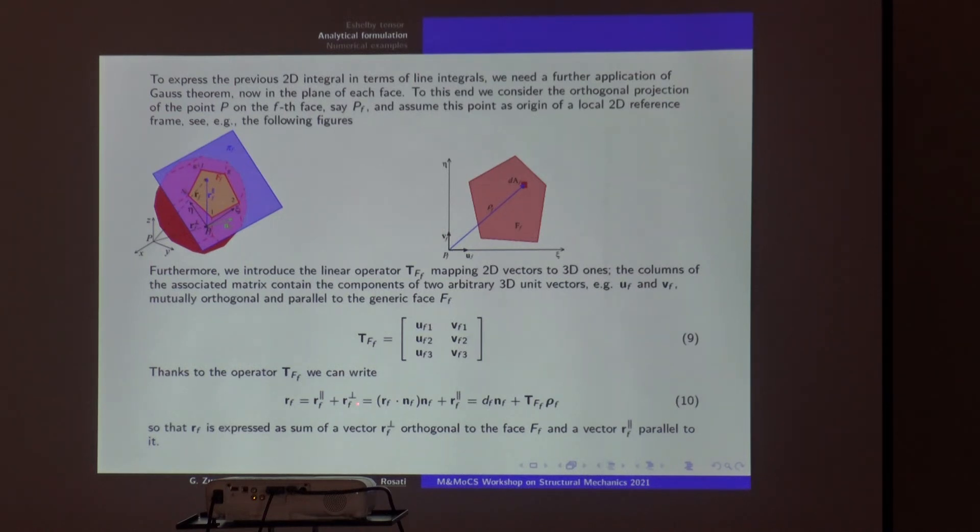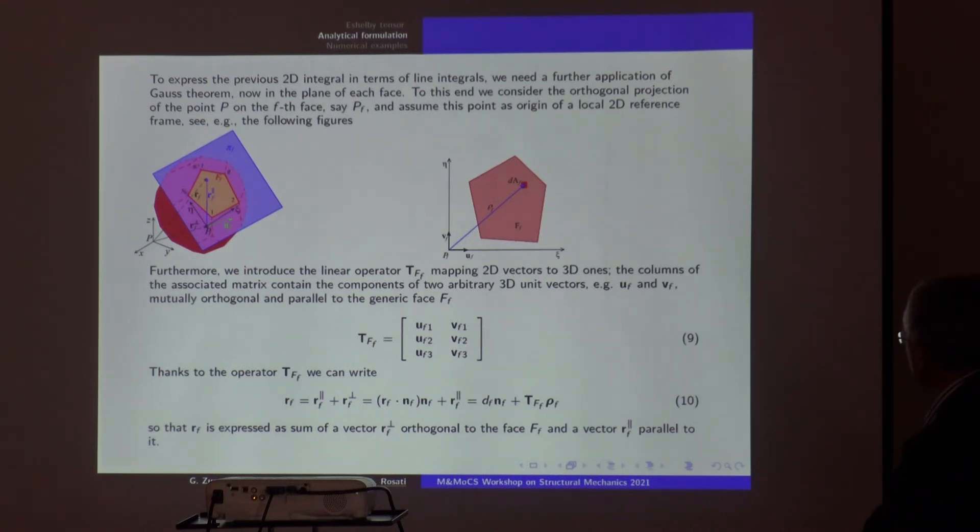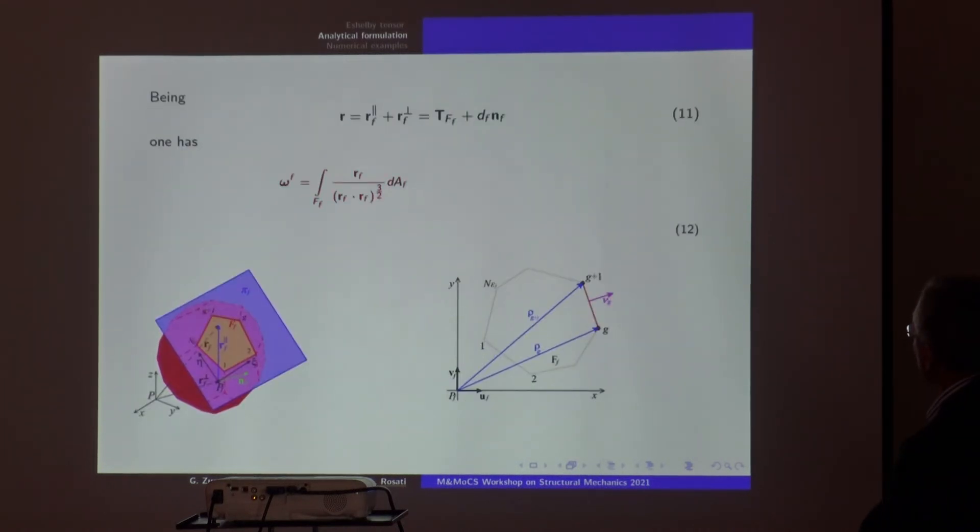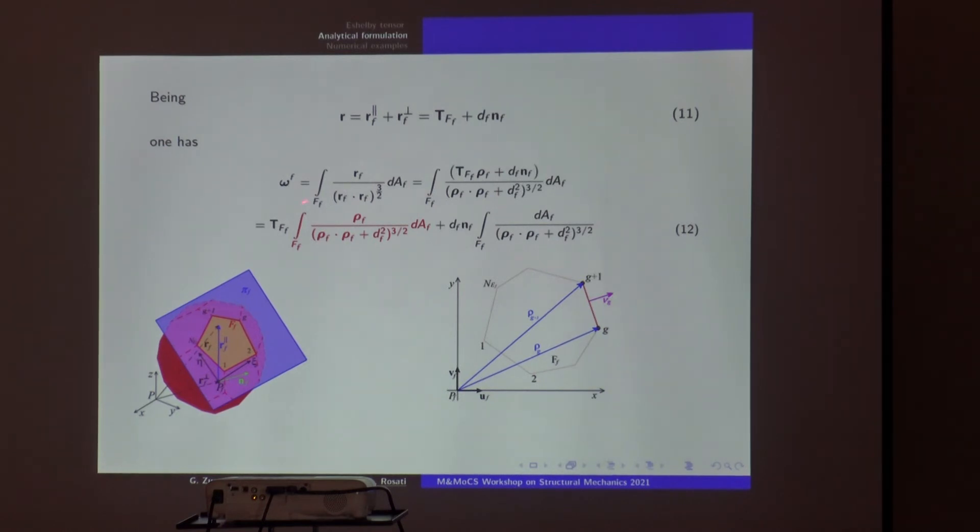At this point you switch from the 3D representation to the 2D representation. Basically, you define the 3D vectors as a sum of these two 3D vectors: one is directly related to the normal to the face, and df is the distance of the generic point from the face. And this is rho—rho is a two-dimensional vector which moves on the faces, and you have this operator that transforms the 2D vector to the 3D one.